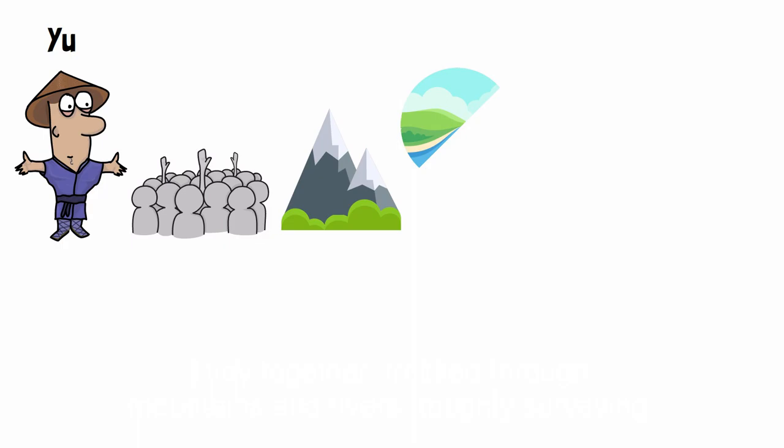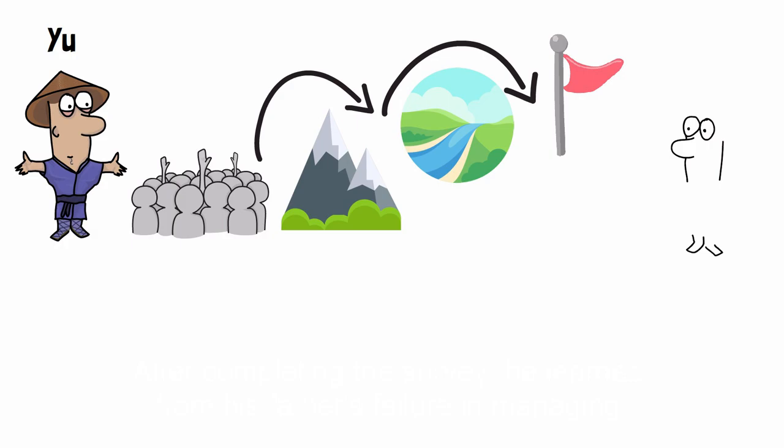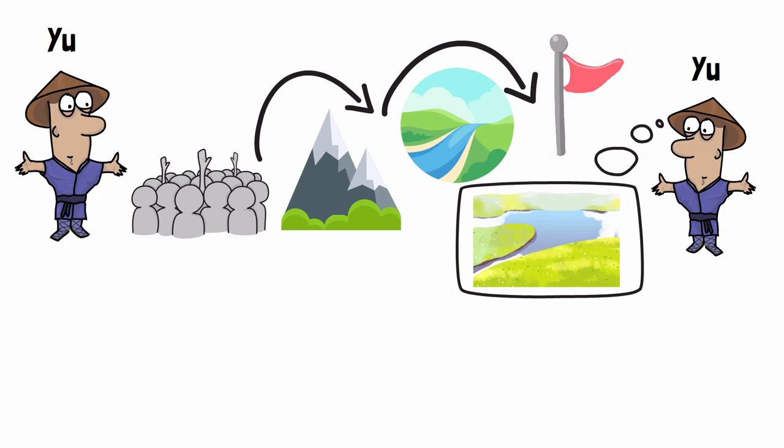Yu immediately summoned Gun's previous assistants and the people to assist. They together trekked through mountains and rivers, roughly surveying the source, upstream and downstream of the water flow, and marking important places with a pile of stones or cut trees. After completing the survey, he learned from his father's failure in managing the water, and finally decided to employ a method of dredging to control the flooding.